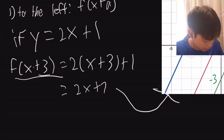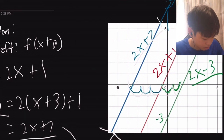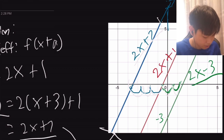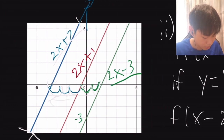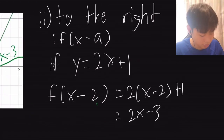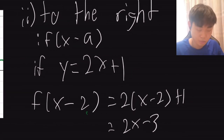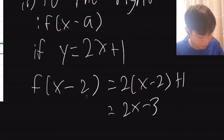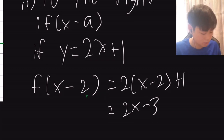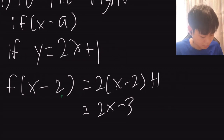That blue line is 3 units to the left. To move it to the right, we use f(x-a). If y equals 2x+1 and we substitute a=2, it becomes f(x-2) equals 2(x-2)+1, which gives 2x-3.